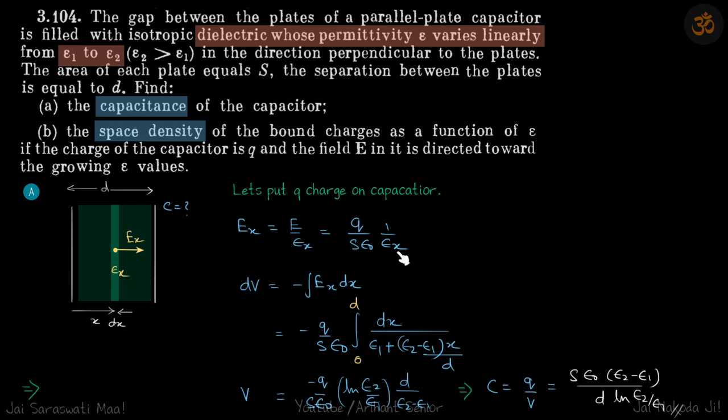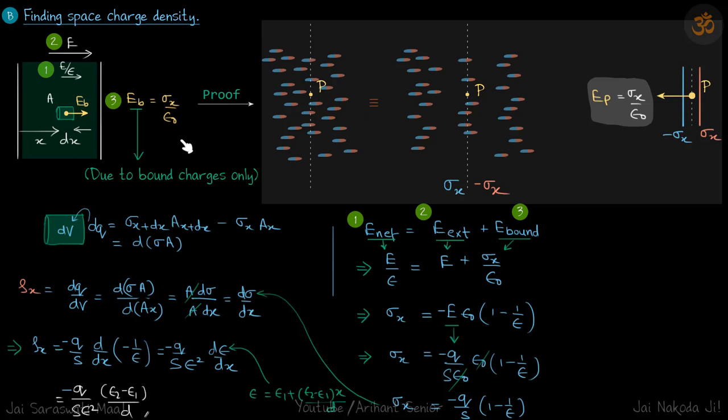We do the integration from 0 to d and put this value. Epsilon x, in terms of x, varies linearly, so at a distance x the permittivity is epsilon 1 plus (epsilon 2 minus epsilon 1) times x divided by d. The constants q, S, and epsilon naught come out. On putting in the limits we get the potential difference V, and then we divide q by V to get the capacitance, which is our answer.